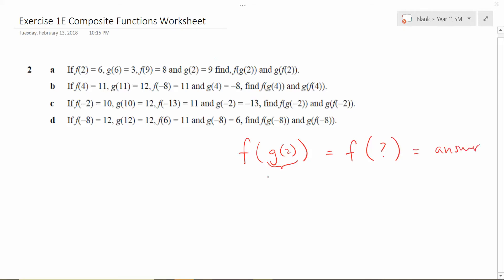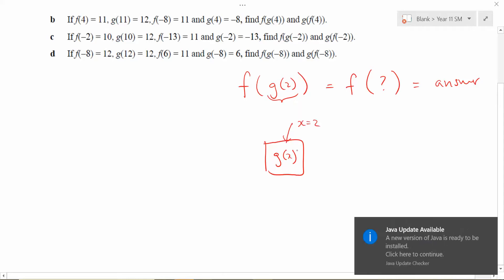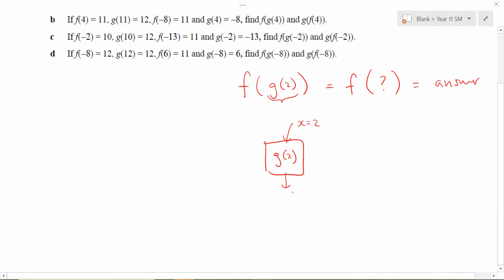So if you think of it as a composite function, you obviously have to have g of x first because that's where you're going to get your g of two, right? Because when you substitute x equals two into it, you will get g of two. That's what it spits out.